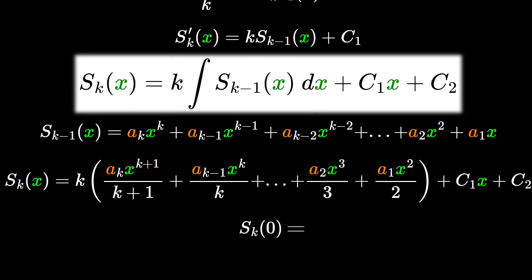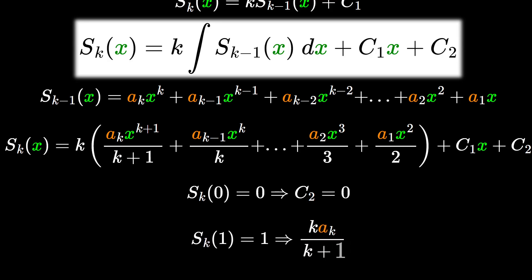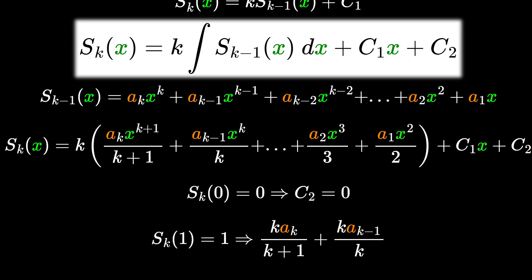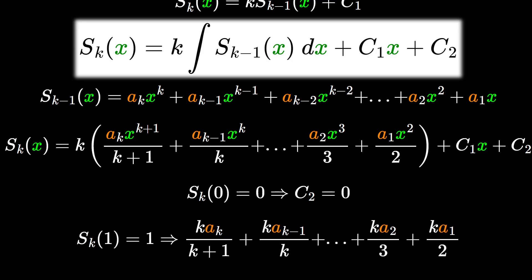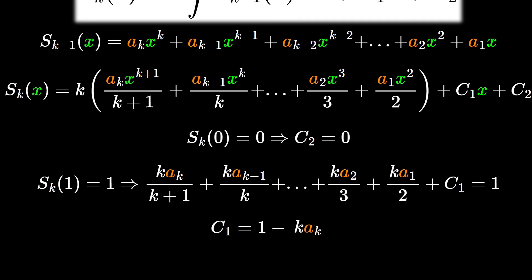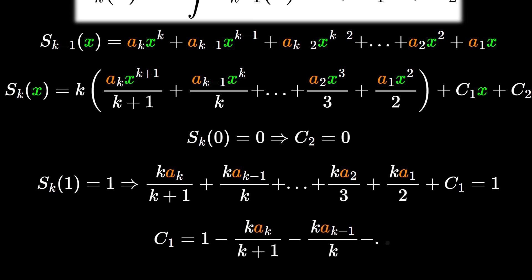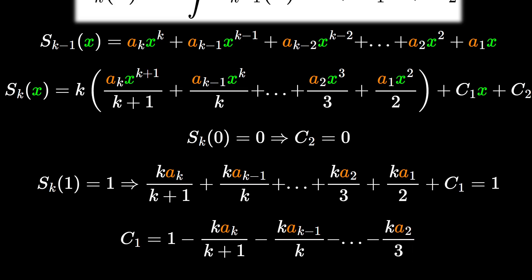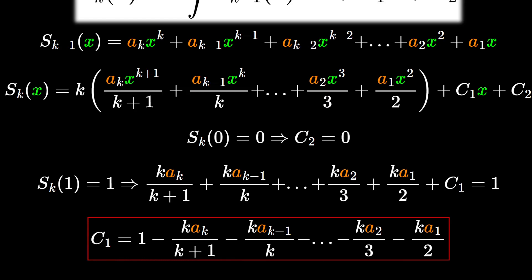We know that S_k(0) = 0, so the polynomial evaluated at 0 gives only c_2, which must equal zero. We also know S_k(1) = 1^k = 1, so the sum of every calculated coefficient plus c_1 equals one. Isolating c_1, we get c_1 = 1 minus the sum of every coefficient calculated so far. That's it — we calculate the last coefficient, the only thing we didn't have at the beginning.